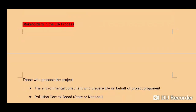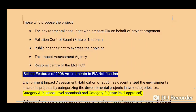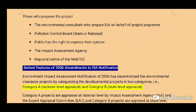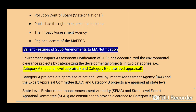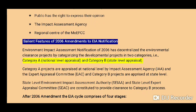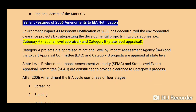Stakeholders in the EIA process include: those who propose the project; the environmental consultant who prepares the EIA on behalf of the project proponent; the Pollution Control Board at state or national level; the public; the Impact Assessment Agency; and the regional centers of MoEFCC.